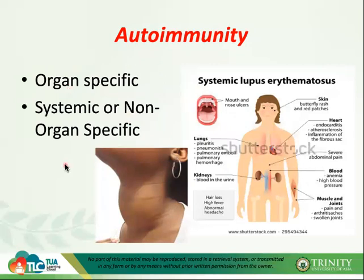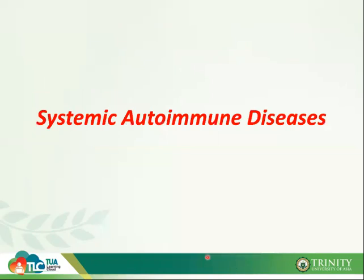Systemic autoimmune diseases like systemic lupus erythematosus (SLE) can manifest in various organs — oral cavities, skin, heart, lungs, kidney, blood, muscles, and joints. For this lecture, we will start with systemic autoimmune diseases, specifically SLE. For the next synchronous class, we will discuss rheumatoid arthritis.